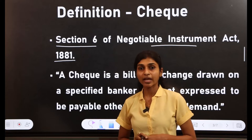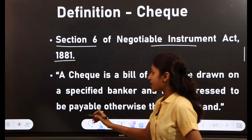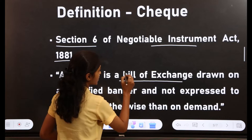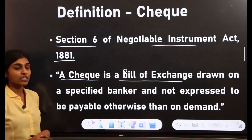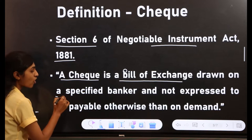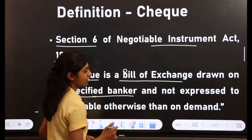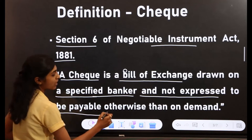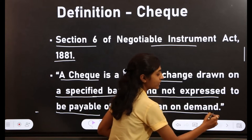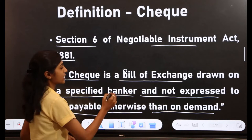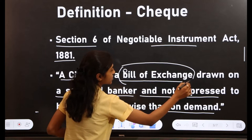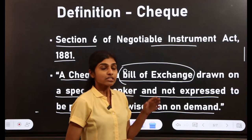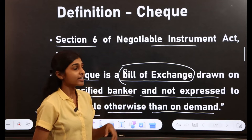Next is the definition. The definition of check is defined in Section 6 of the Negotiable Instruments Act, 1881. A check is a bill of exchange drawn on a specified banker and not expressed to be payable otherwise than on demand.